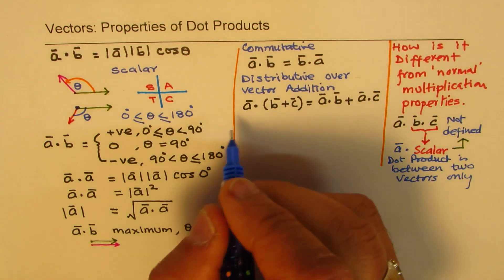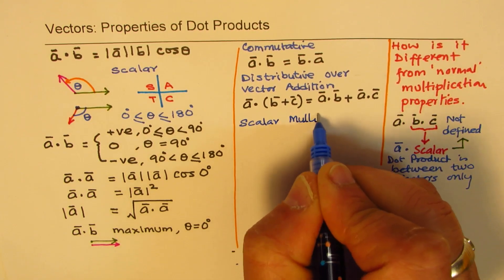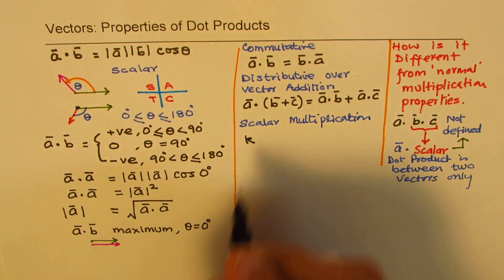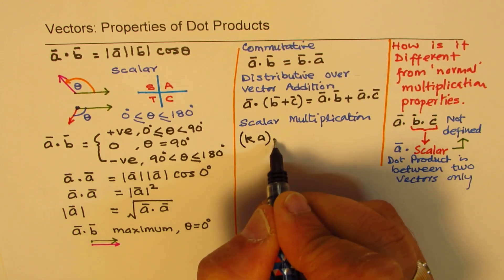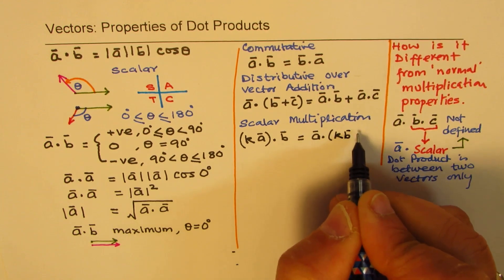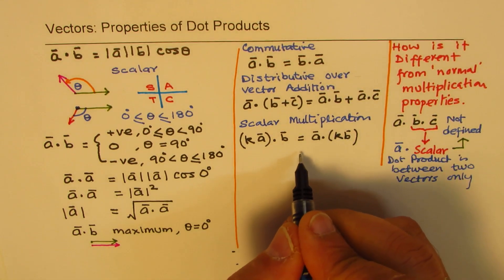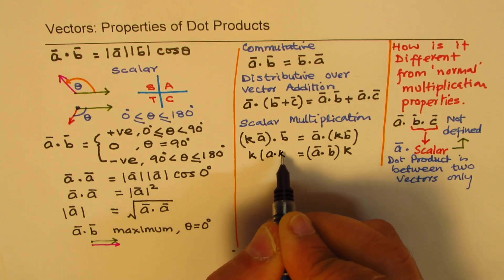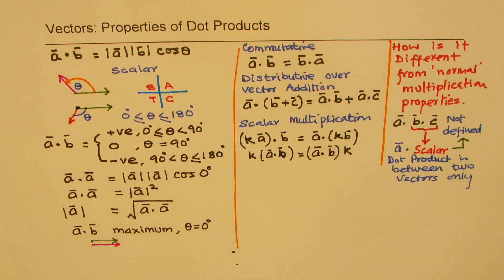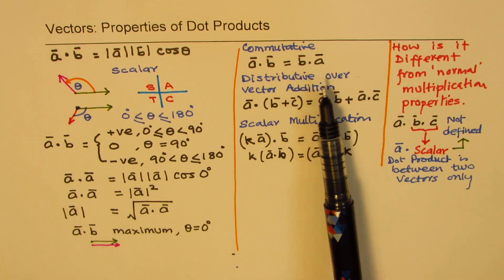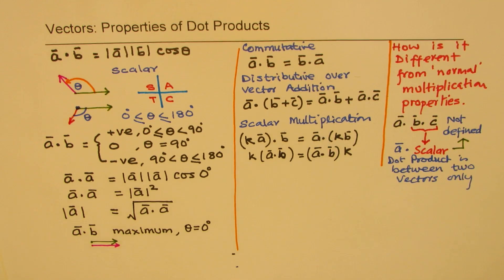However, scalar multiplication is valid. If k is any scalar quantity, then (k·a) dot b equals a dot (k·b), which also equals k times (a dot b). So scalar multiples can be moved freely in a dot product expression. We have commutative property, distributive property over vector addition, and this scalar multiplication property.